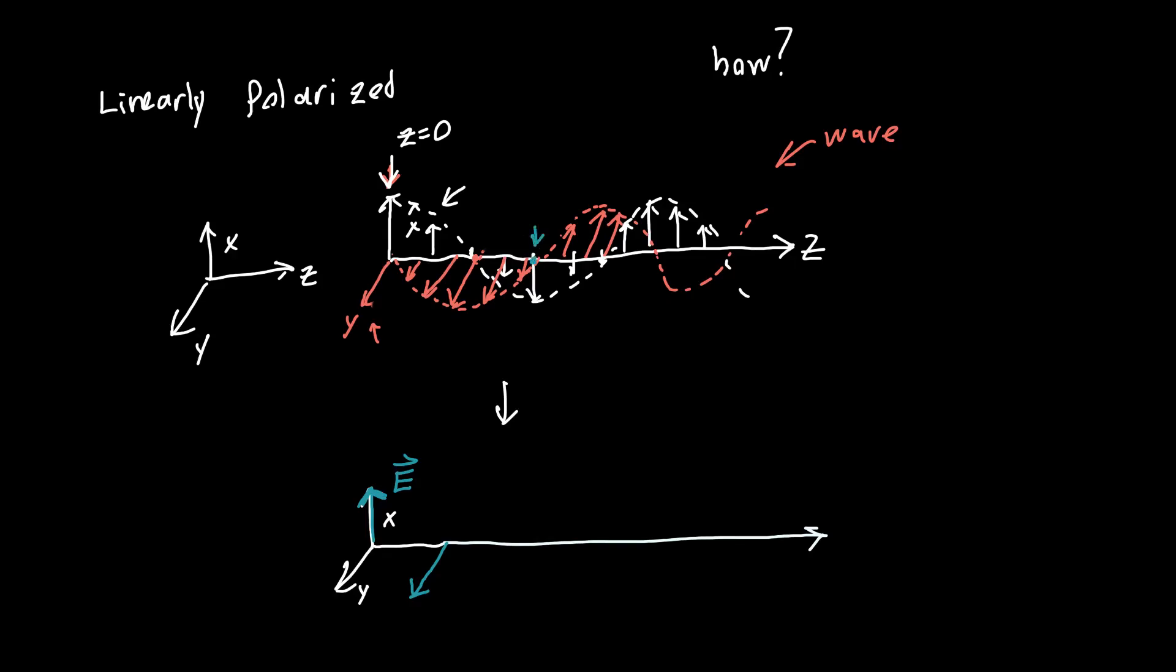And then if we go some distance more, it's polarized in negative x, and then negative y, and then x, and so on, and so on.